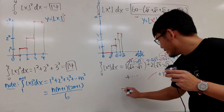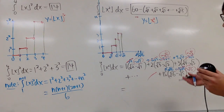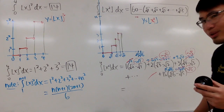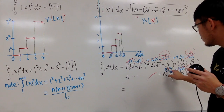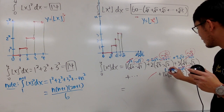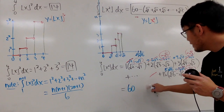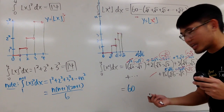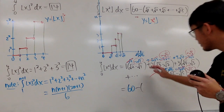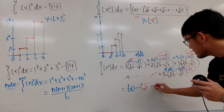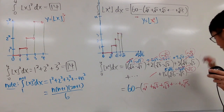Therefore, when you combine everything, you end up with 60. And everybody has a negative sign, so it's 60 minus the sum of square root of 1 plus square root of 2, and so on up to square root of 15. This is very cool.